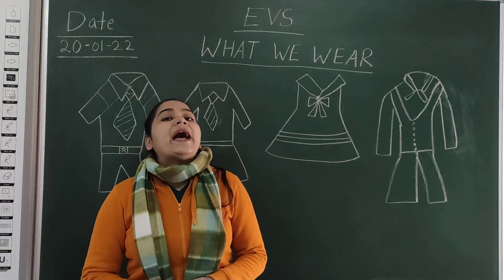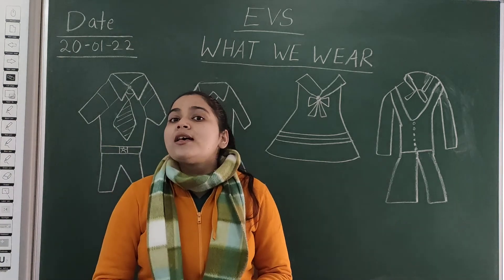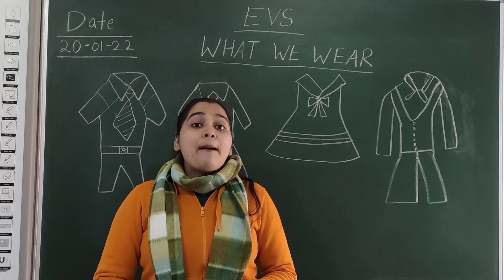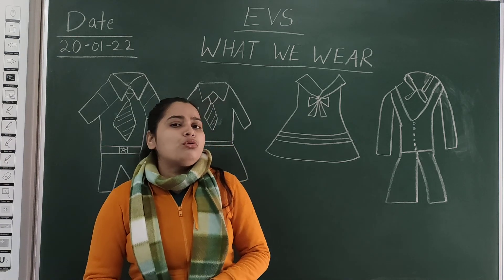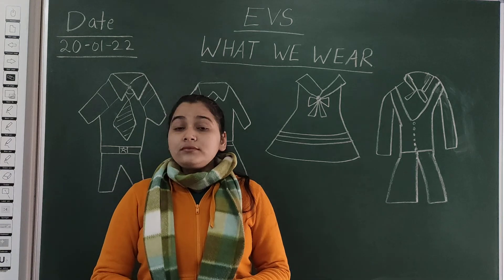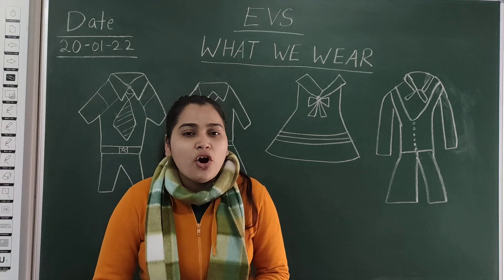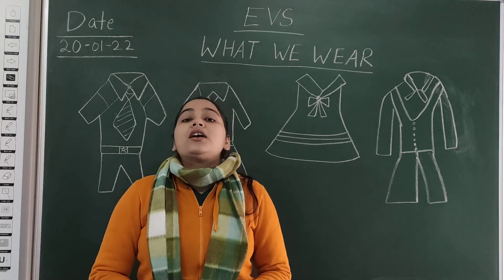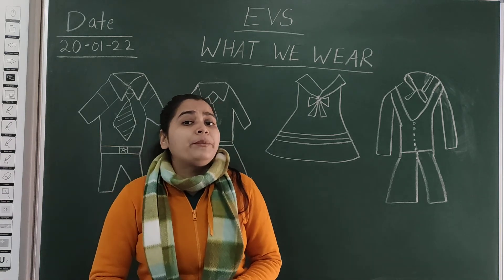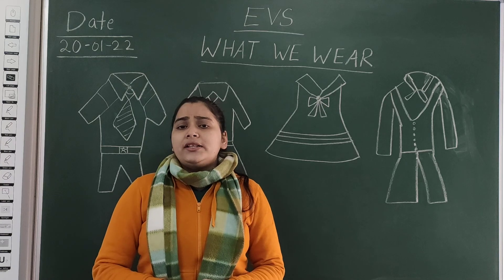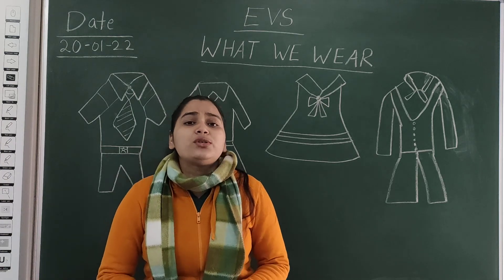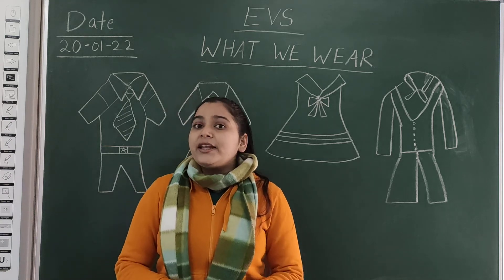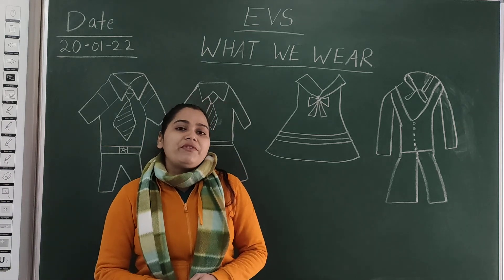We have different types of clothes for different places. For example, if we go to school, what do we wear? We wear our uniform, which is known as school dress. Jab hum school jaate hai, to hum kya pehente hai? Hum pehente hai school dress, ya usse hum bolte hai uniform. And in school dress, what do we wear?